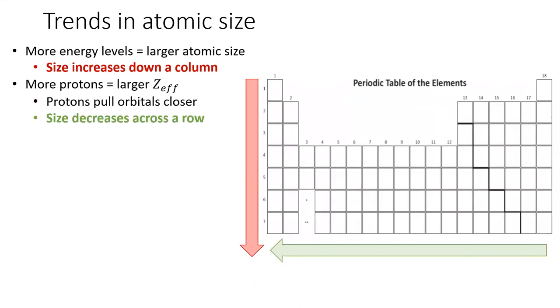As we go to the right across the table, the effective nuclear charge felt by the outermost electrons increases, which pulls those energy levels in closer. Therefore, size decreases across a row. This places our largest elements at the bottom left and the smallest elements in the upper right.